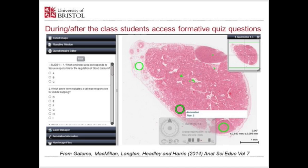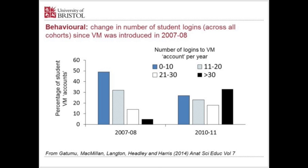Thinking about the behavioural dimension of engagement: these graphs show the percentage of student VM accounts accessed a given number of times during the year, comparing 2007-2008 with three years later. Blue bars represent accounts accessed fewer than 10 times; black bars more than 30 times. There's quite a change in profile — the virtual microscope is becoming much more embedded into teaching, and students are accessing it on a much more regular basis.